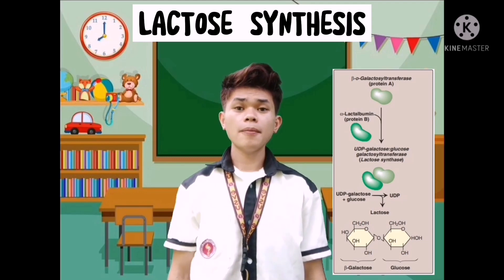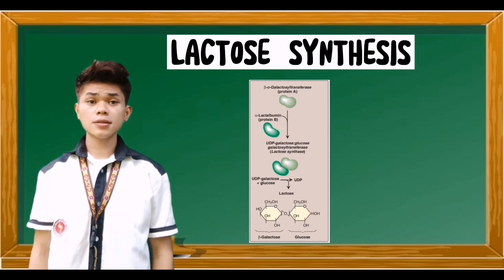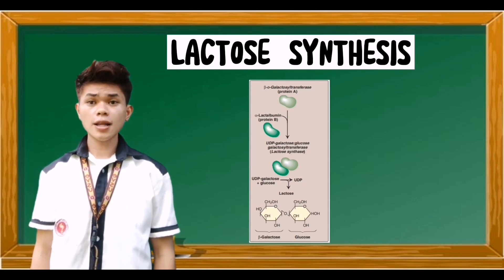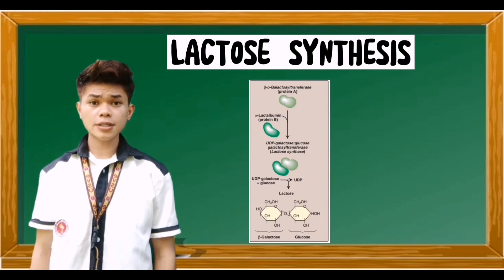Milk and other dairy products are the dietary sources of lactose. Lactose is synthesized in the Golgi by lactose synthase, which transfers galactose from UDP-galactose to glucose, releasing UDP. This enzyme is composed of two proteins, A and B.